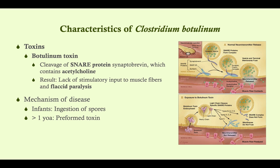In infants, the mechanism is ingestion of spores — such as from honey or corn syrup. The spore gets into the infant's digestive tract and germinates there because infants lack competing gut bacteria. In adults — anyone over age one — we have plenty of GI bacteria to outcompete C. botulinum. So in adults, disease comes from preformed toxins: if bacteria aren't killed during canning, they form toxins, and we ingest those toxins directly.